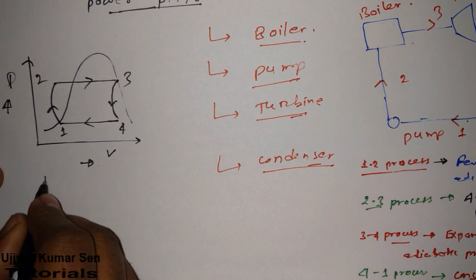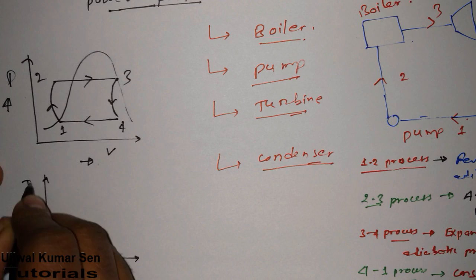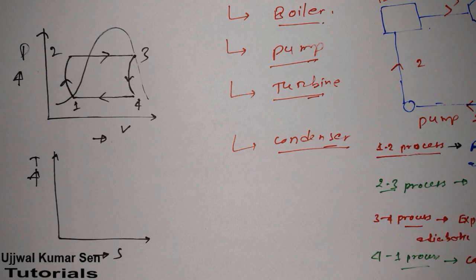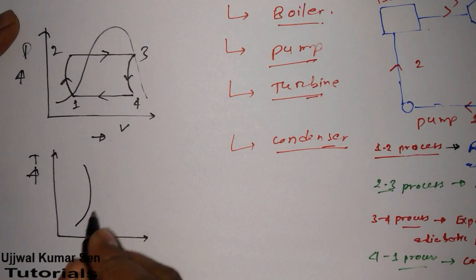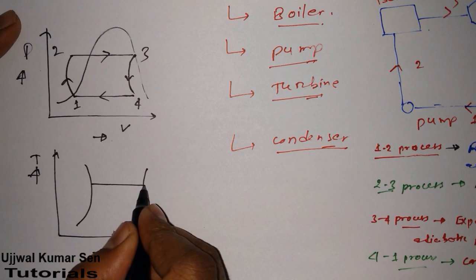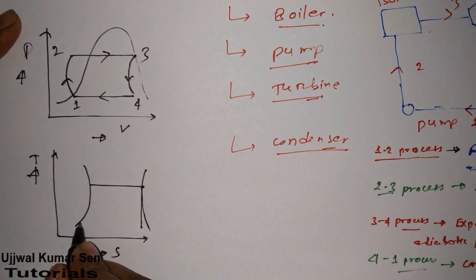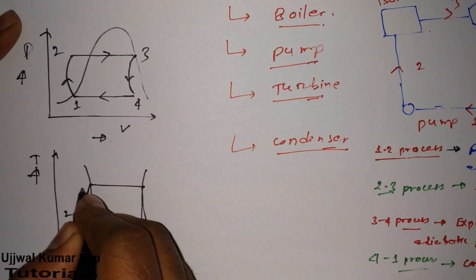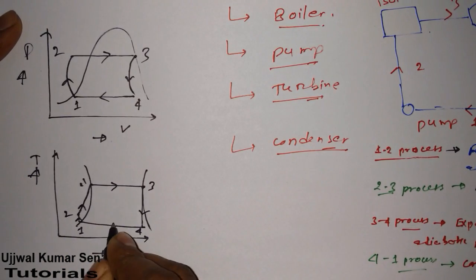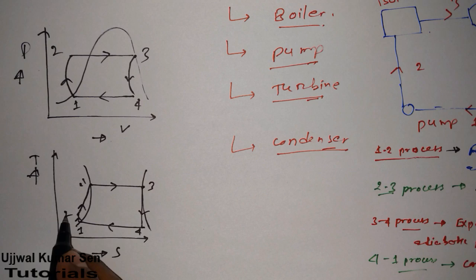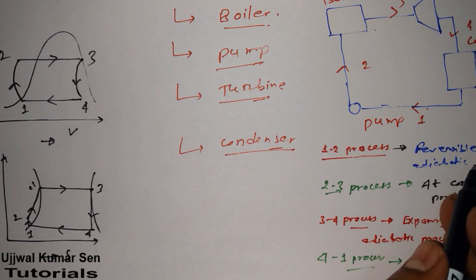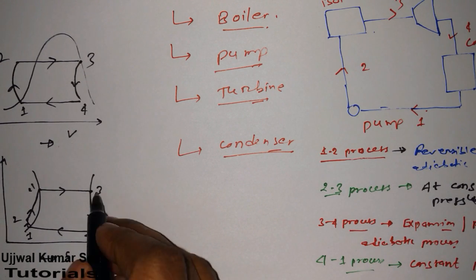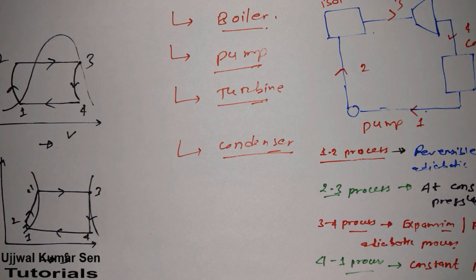Now let's go for the TS diagram. T is temperature and S is entropy. In the TS diagram, the 1-to-2 process is a reversible adiabatic process, also known as an isentropic process — that's why entropy is constant. Similarly, the 3-to-4 process is also a reversible adiabatic, isentropic process, so entropy is constant there as well.